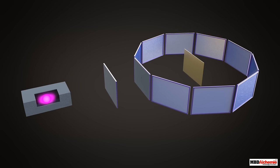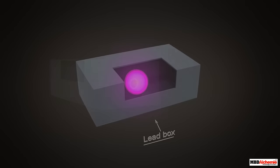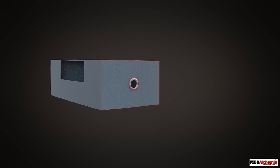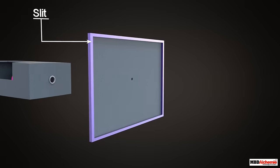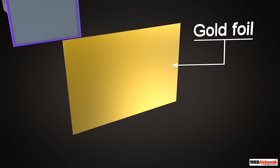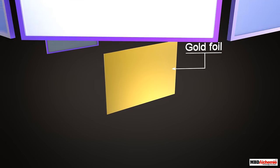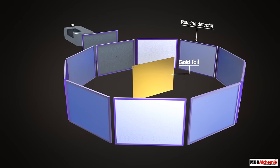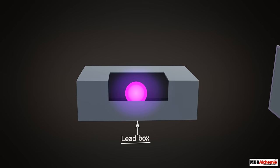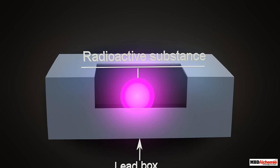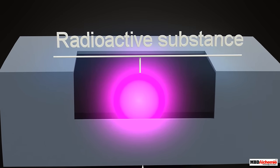Now let us look into the details of the alpha particle scattering experiment. The setup of the experiment consisted of a thick lead box with a hole on one of its walls, a slit, a thin gold foil, and a rotating detector at the end. Inside the lead box, a radioactive substance rich in alpha particles was kept. Now let us see the experiment.